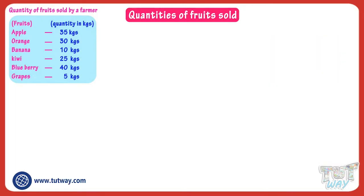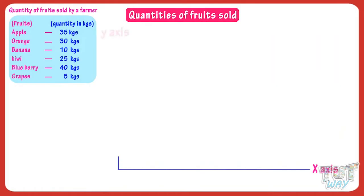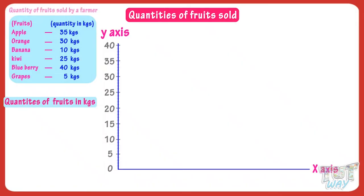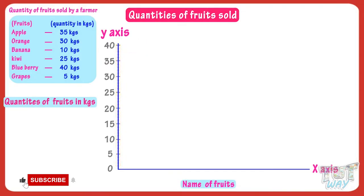A bar graph has two axes: x-axis and y-axis. We have two types of data — one is the numeric data showing quantities of fruits in kgs, and the other is textual data, the names of fruits. The axis which shows numeric data is called the scale. On the y-axis we are showing the numeric data, and our numeric data is in the range of 1 to 40.